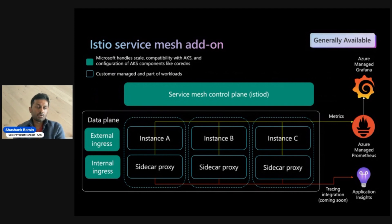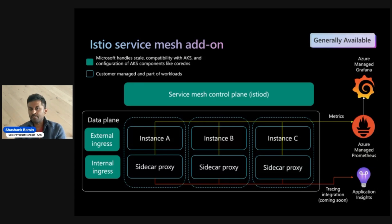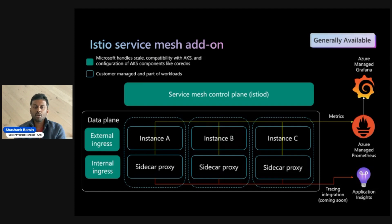Moving to the layout of the Istio add-on itself — when you enable the Istio add-on on your cluster, the control plane (Istiod) gets deployed on the customer's cluster nodes. You have the option of enabling an external ingress, internal ingress, or both, and those instances also get deployed on your customer nodes. In terms of the sidecar, you can add revision labels to your namespaces and get sidecars injected automatically to any workload coming up within that namespace, or choose to manually inject the sidecars.